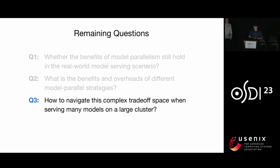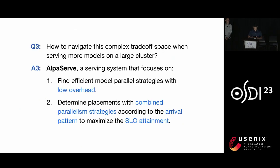After investigating Q1 and Q2, we found that not only do different real-world factors affect performance, but each parallel strategy has its own pros and cons. To navigate this complex trade-off space, we build AlpaServe — a serving system that focuses on: first, finding efficient model parallel strategies with low overhead; and second, determining placement with combined parallelism strategies according to the arrival pattern to maximize SLO attainment.